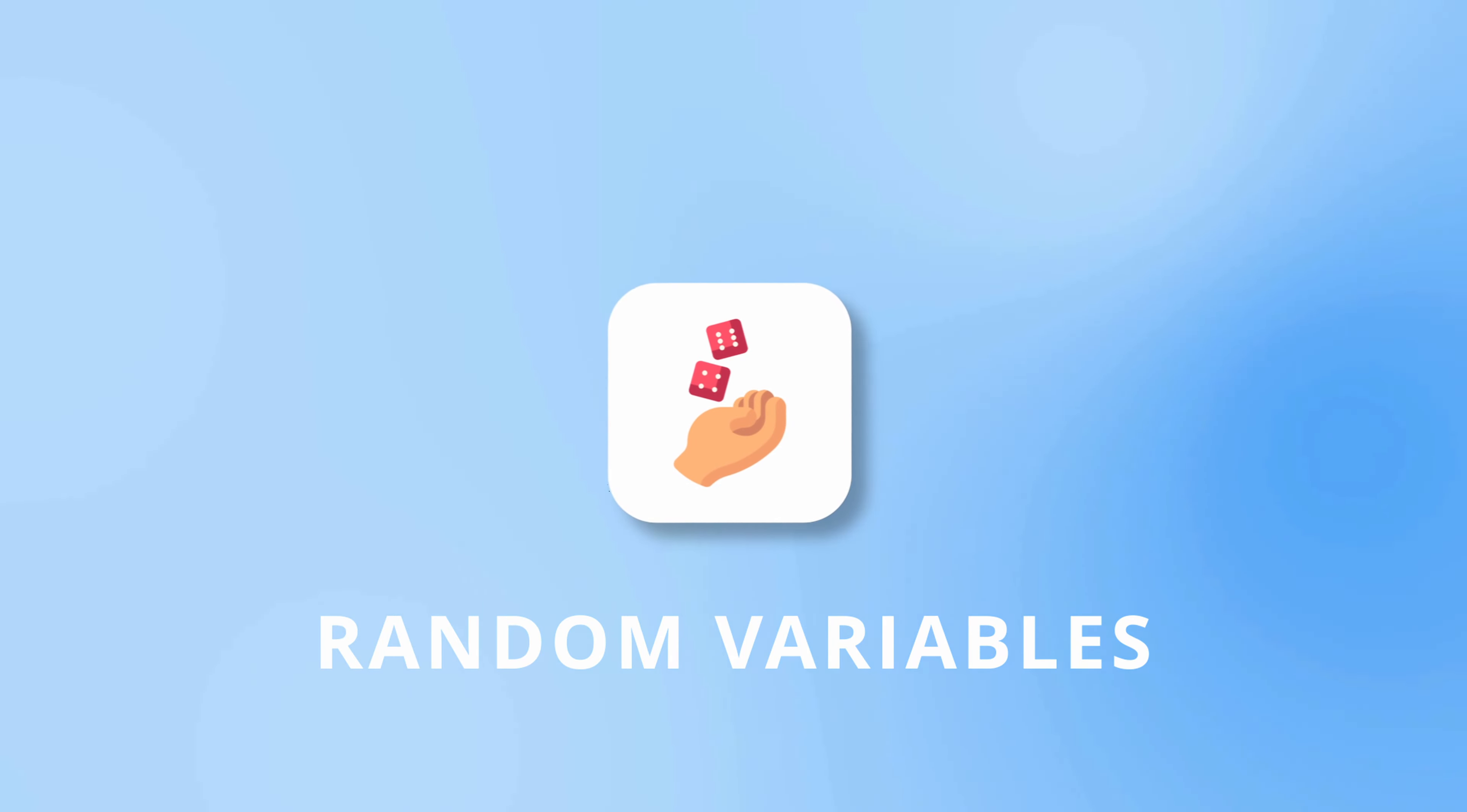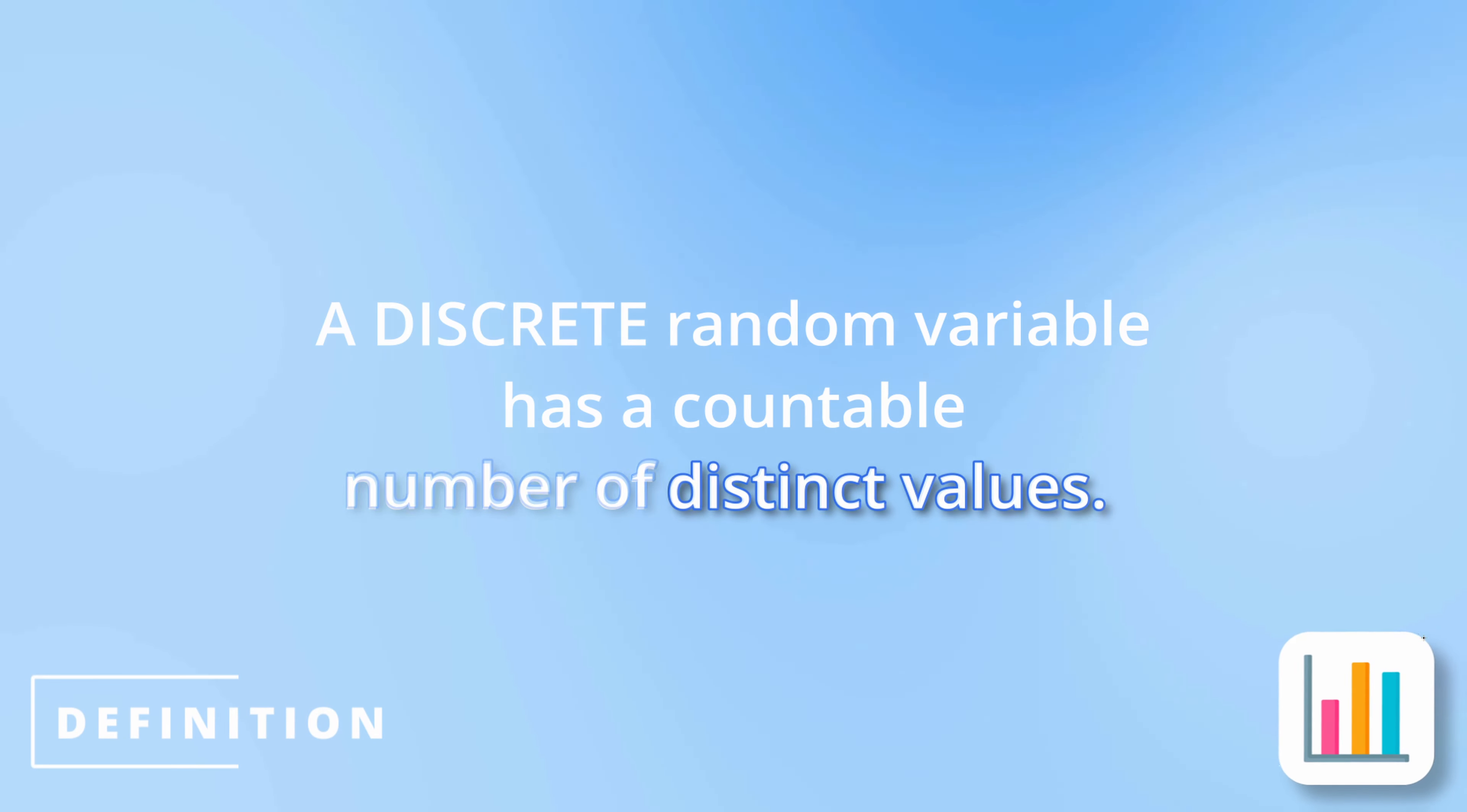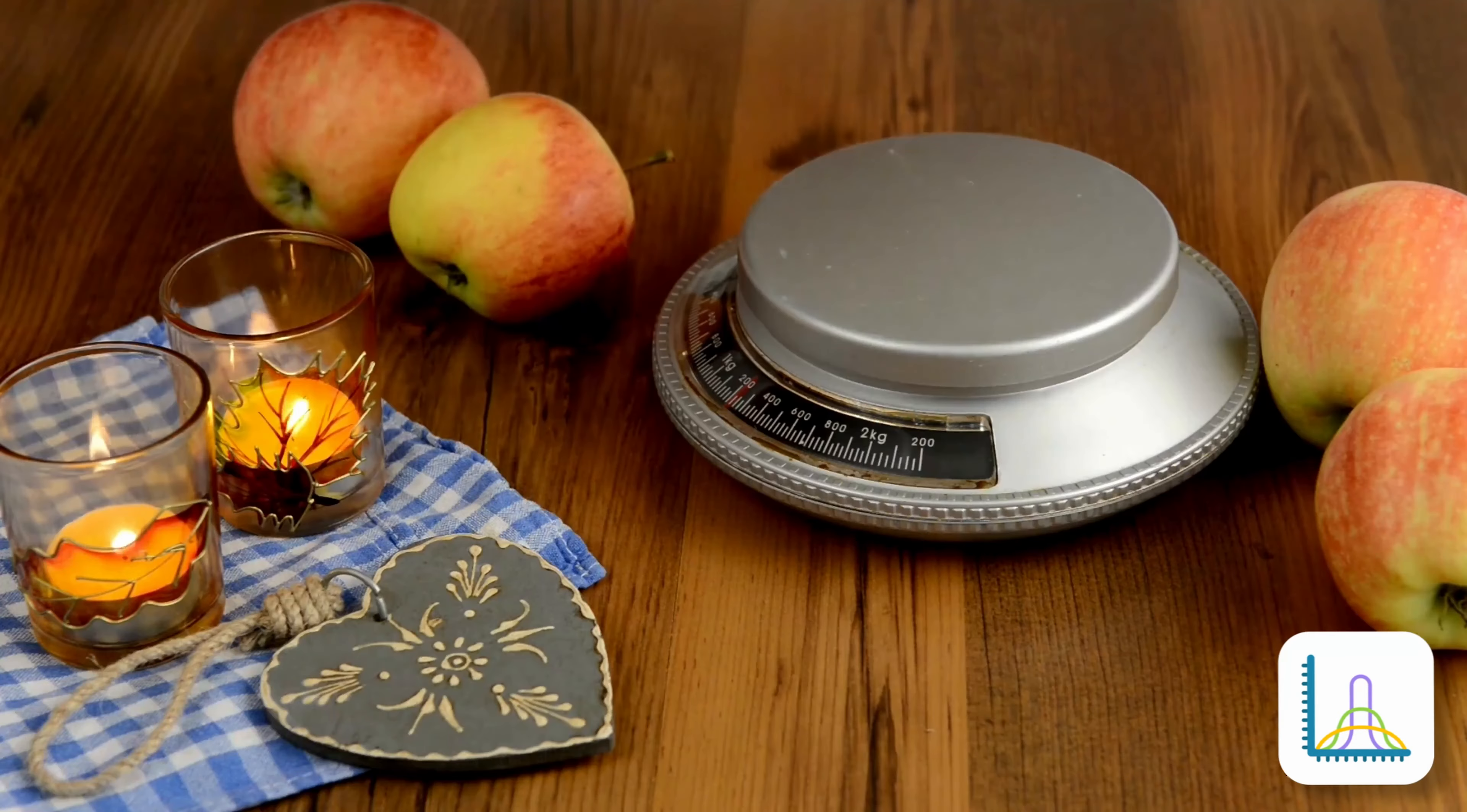Exam P covers two types of random variables, discrete and continuous. A discrete random variable is one that can take on a countable number of distinct values. So an example would be the number of heads in a series of coin flips. A continuous random variable, on the other hand, is one that takes on an uncountable number of values. So for example, the height of a person or the weight of an object.